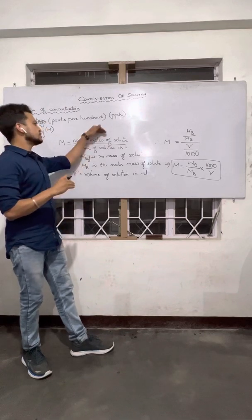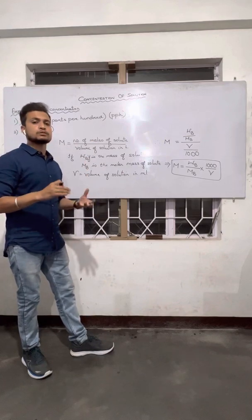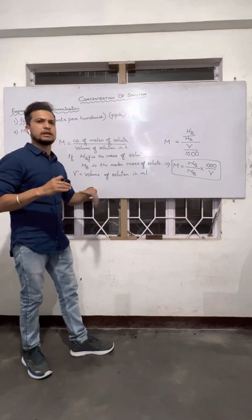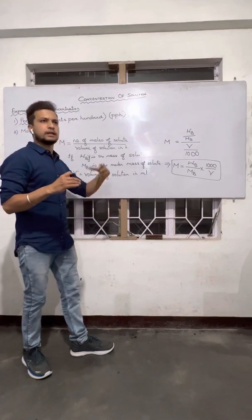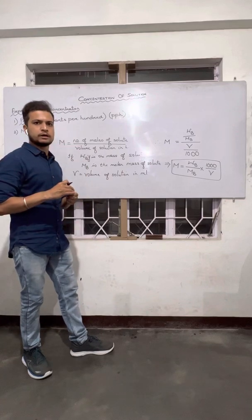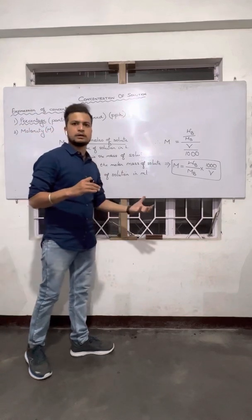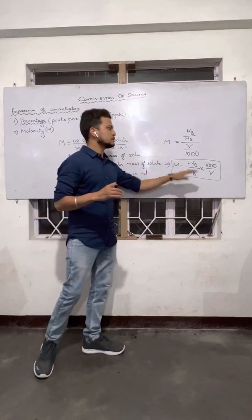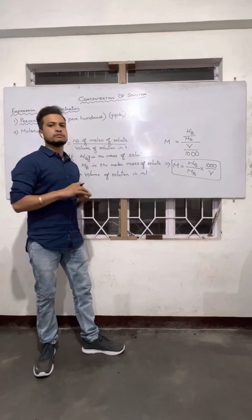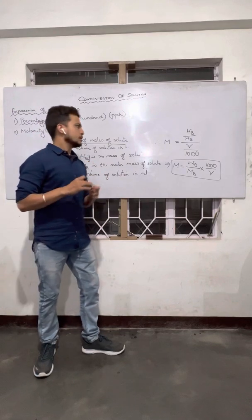So if number of moles is given and volume is in liters, you can directly use the basic formula. But in most problems, they don't give you moles directly — they give you a mass of the solute and the molecular mass, and volume is usually given in cm³ or milliliters. In such cases, M = (Wb/Mb) × (1000/V) is the perfect formula to use, which we will apply in the next video.